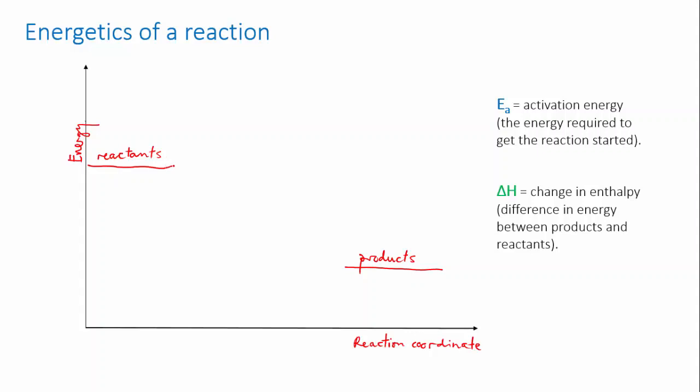We can draw a curve that represents how the energy changes through the reaction. We start with this much chemical energy, and then we add some energy in order to get the reaction started. And then the reaction emits some energy, and we end up with our products.